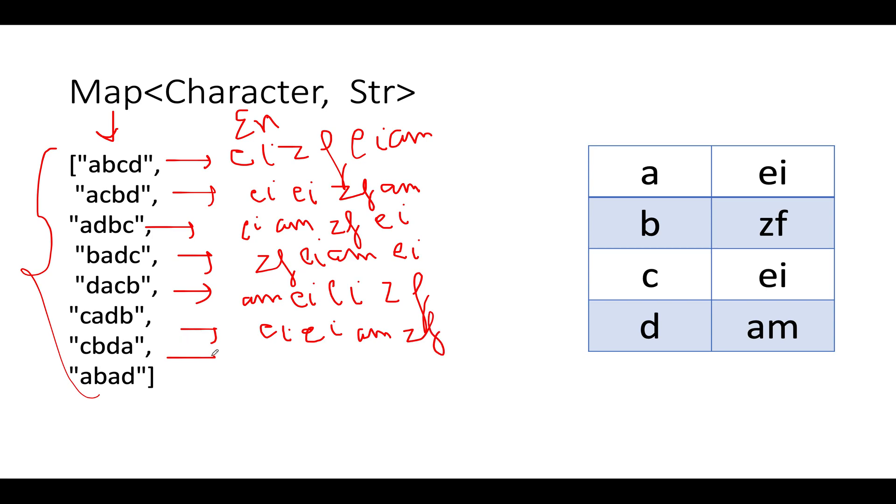Next we have CBDA, so C points to E I, then we have B points to Z F, then we have D points to AM, and then we have A points to E I.